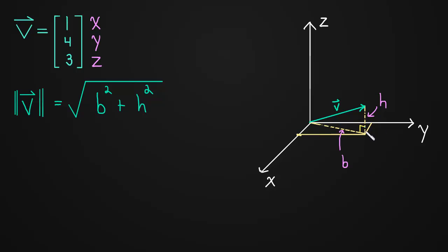The height is easy. The height is how far we go up in z, and we're just going up three units in z. So the height is just simply three.